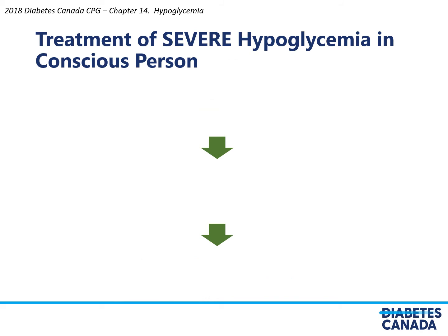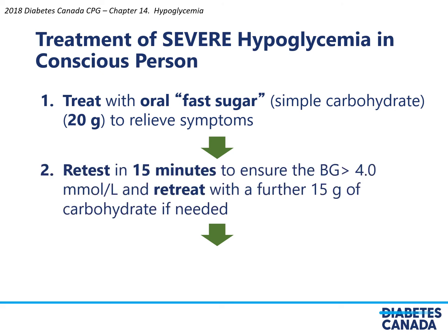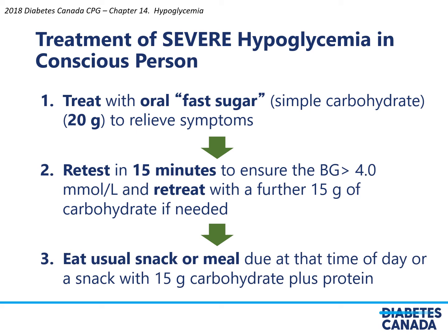Treatment of severe hypoglycemia in a conscious person is different. They should be treated with oral fast sugar; however, the amount should be 20 grams to relieve symptoms. A retest should be done in 15 minutes to ensure blood glucose has come up, and retreatment should be instituted if necessary. Finally, eating the usual snack or meal due at that time of day, or a snack with 15 grams of carbohydrate plus protein, would also be appropriate.